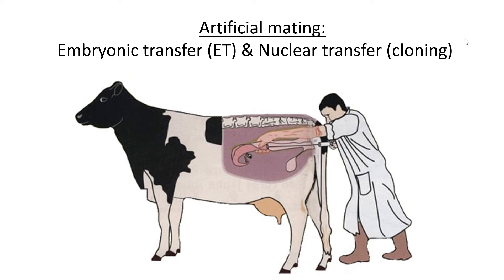In the previous lesson we looked at natural mating versus artificial mating, and the first artificial mating example was artificial insemination, as we can see in the picture on the screen. Basically this is when a human places sperm into a cow with no natural mating happening. The two other examples we're going to look at are embryonic transfer, also known as ET, and nuclear transfer, which is basically cloning.